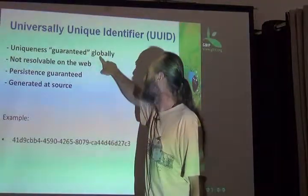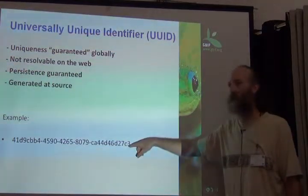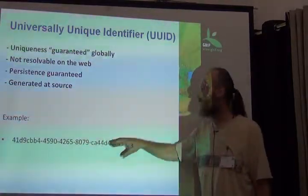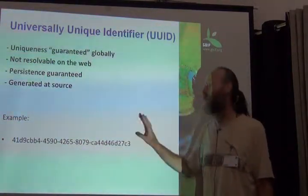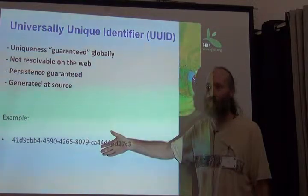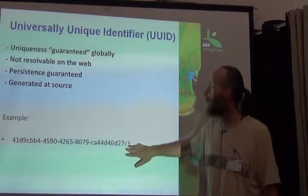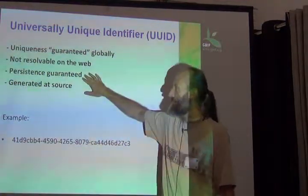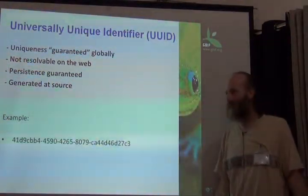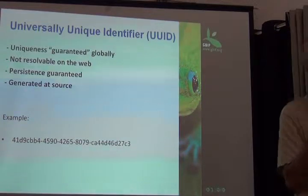So we'll call UUIDs guaranteed globally unique. But if you put one into a web browser, it doesn't take you to the object it identifies, so it's not resolvable. Persistence is guaranteed in the scheme of global unique identifiers at large, though it depends on whether you overwrite it in your own database. And you can generate these yourself — I'll show you that it's quite easy in a moment.